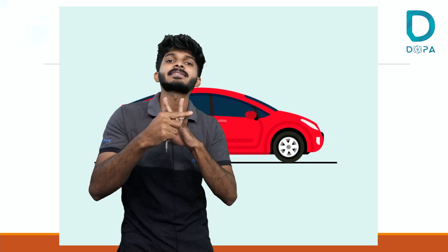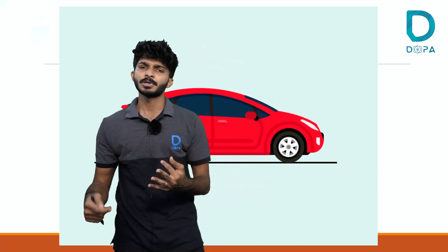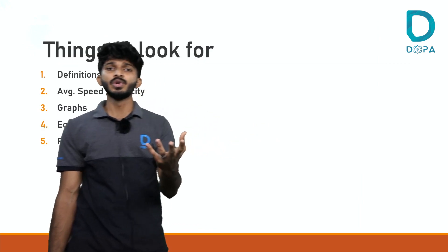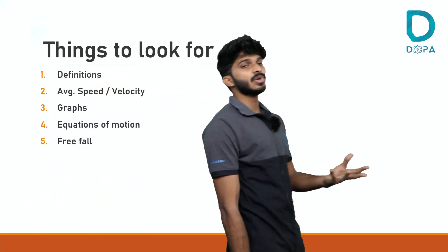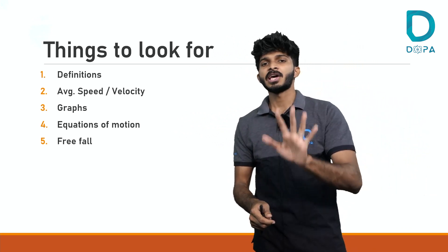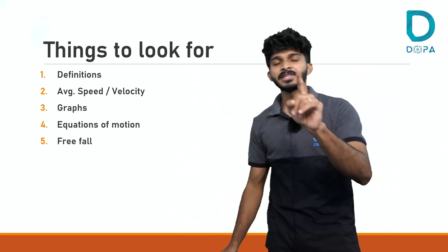Motion is said to be one-dimensional when only one coordinate changes with respect to time and the remaining two are constant. We have three coordinates: x, y, z. In one-dimensional motion, only x is changing while y and z are constant, or only y is changing while x and z are constant, or only z is changing while x and y are constant. I would like to divide this chapter into five entities — if you are thorough with these five entities, you are done with this chapter.